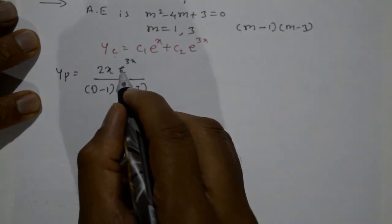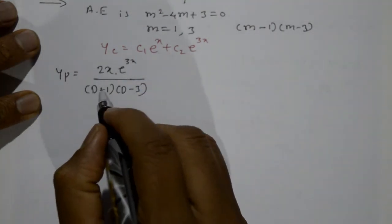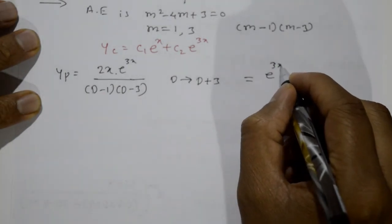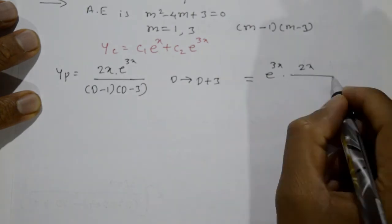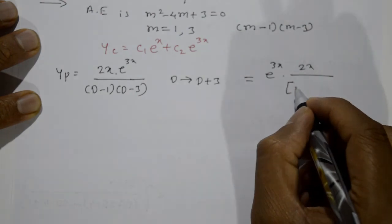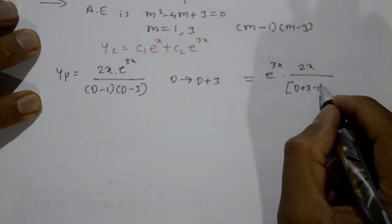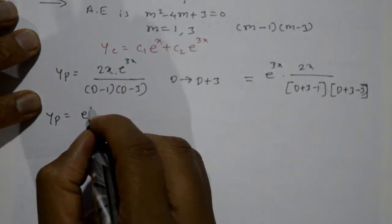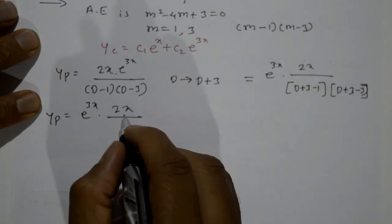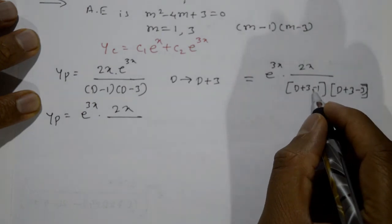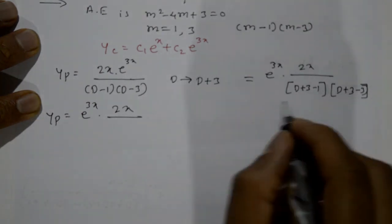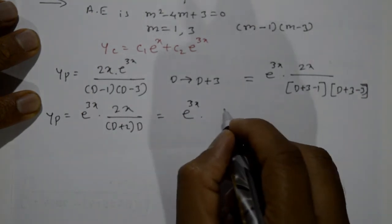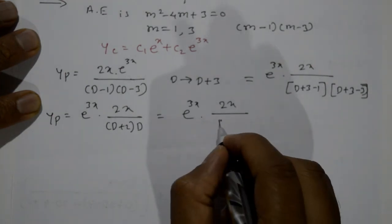This is Type 4: e^(3x)·φ(x), so shift D to D+3. After shifting: yp = e^(3x)·2x / ((D+3-1)(D+3-3)) = e^(3x)·2x / ((D+2)·D). Expanding: denominator = D² + 2D. So yp = e^(3x)·2x / (D² + 2D).